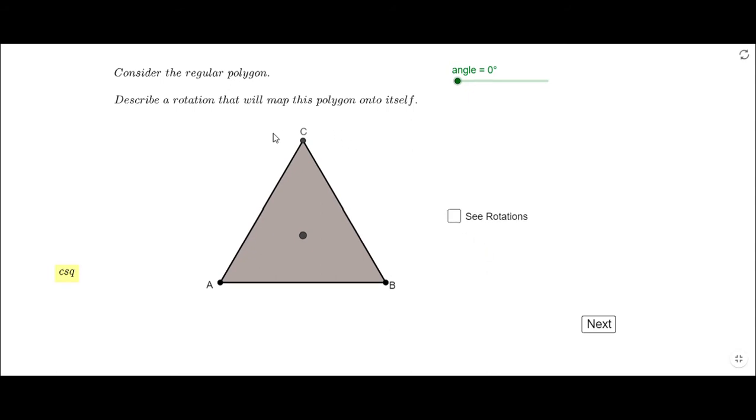The first polygon you see is a polygon of three sides, a triangle, an equilateral triangle in fact. This is a regular polygon of three sides and I'm going to start rotating to see when this point A will map on top of point B.